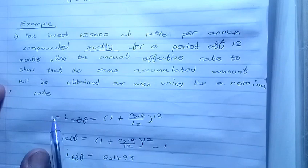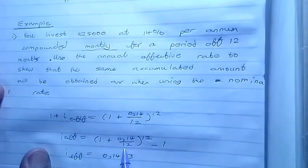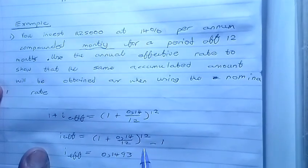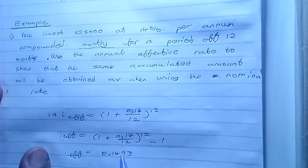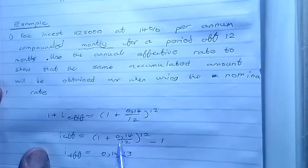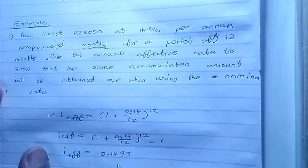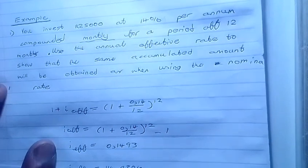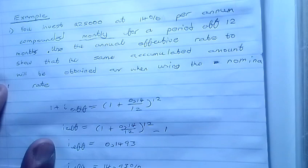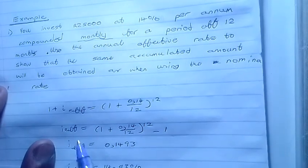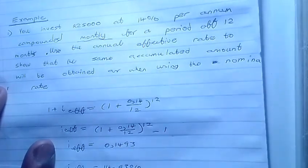So from there we take this one and put it aside and raise this to negative 1. From there we get this value, we insert this in a calculator times this by 100. It shows the value of 14.93%, which is almost the same as the annual interest, 14%.